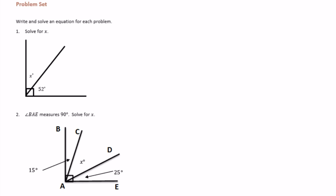What we have here is a right angle. We know it's a right angle because of that symbol right there — that tells us a right angle is 90 degrees. So we have x degrees, 52 degrees, and the whole thing adds up to 90 degrees. We have x degrees plus 52 degrees is equal to 90 degrees.